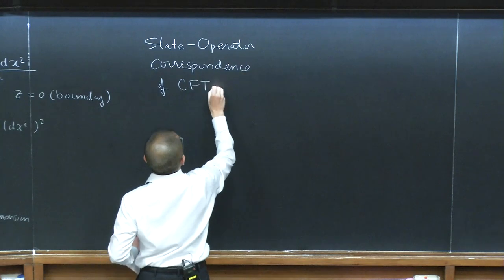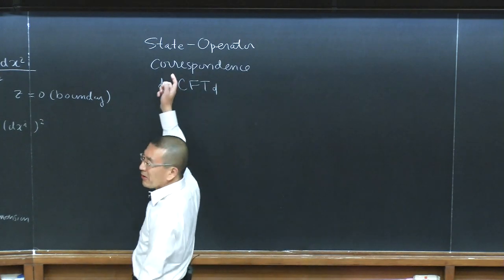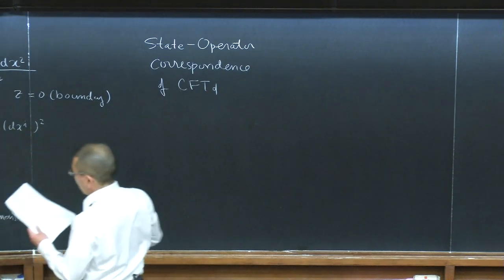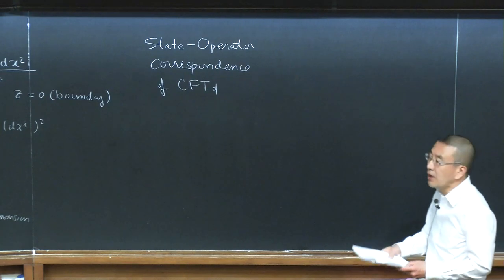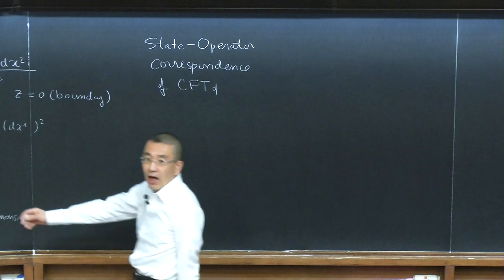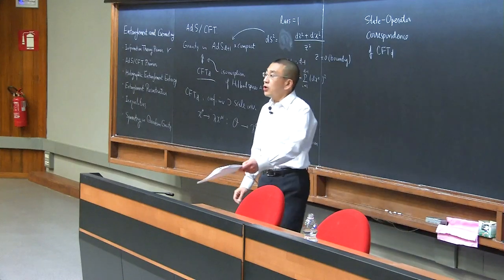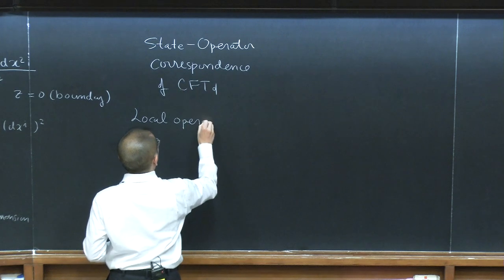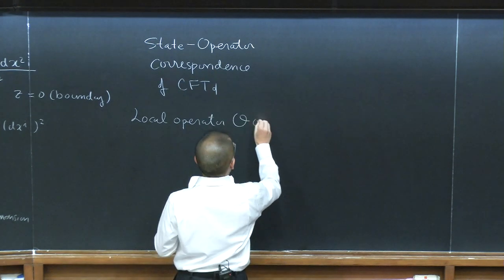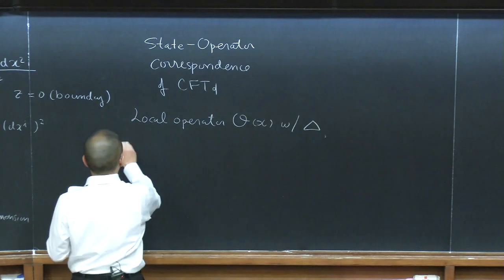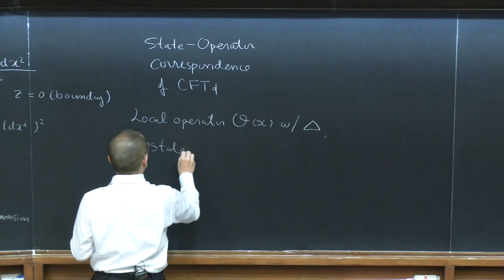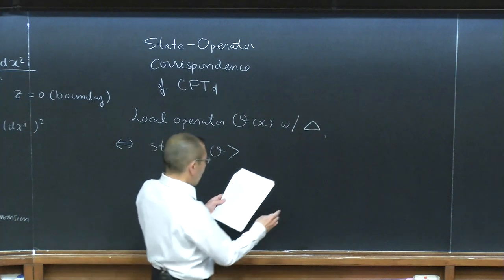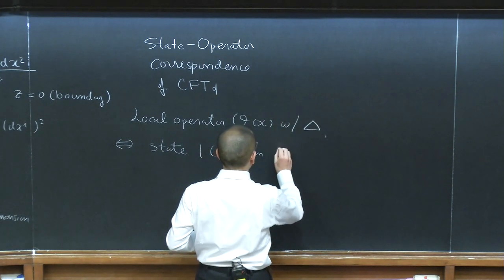This is a correspondence within conformal field theory — not a correspondence to the AdS side. It is a correspondence between local operators having a fixed scaling property and states in conformal field theory. More specifically, if you have a local operator O of X with scaling dimension delta, then it's supposed to be equivalent to a state — I denote the state using the same symbol as the operator — in the Hilbert space of conformal field theory.